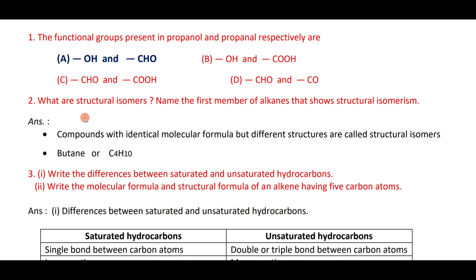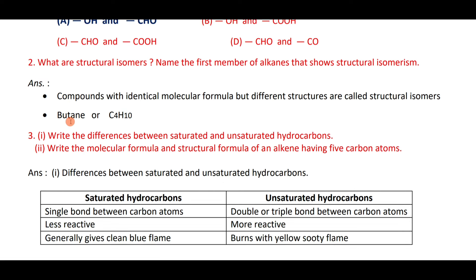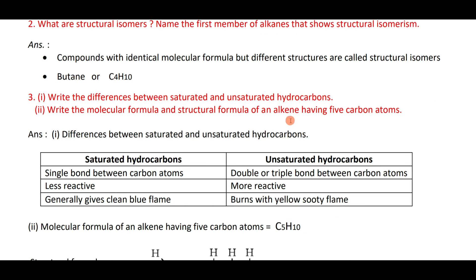Structural isomers are compounds having the same molecular formula but different structures. The first member of alkanes to show structural isomers is butane — C₄H₁₀. Saturated hydrocarbons have single bonds between carbon atoms; unsaturated hydrocarbons have double or triple bonds. Saturated hydrocarbons are less reactive; unsaturated ones are more reactive.